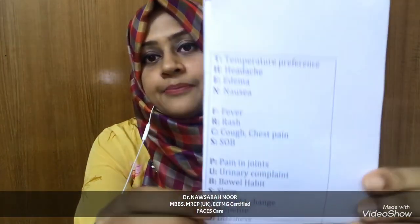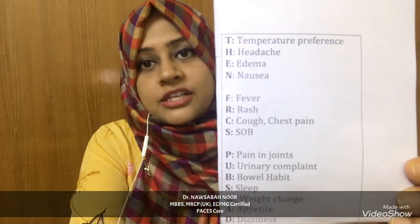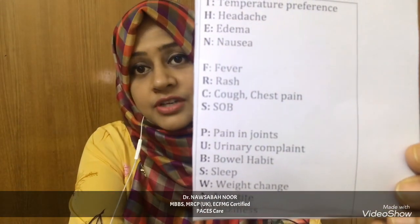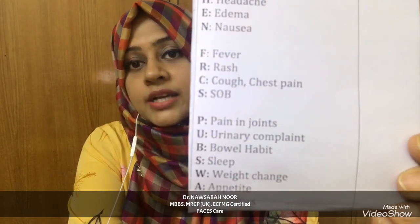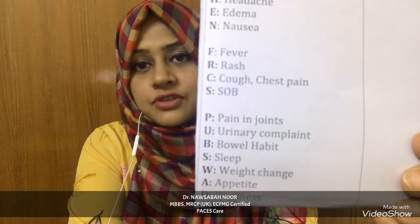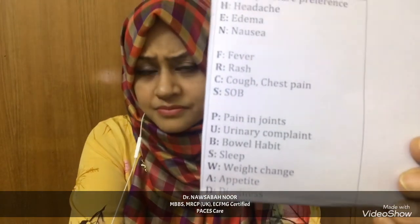Now the review of systems box. You can ask questions from head to toe related to each body system. Or use the mnemonic THEN FRCS POP SWOT: T for temperature preference, H for headache, E for edema, N for nausea and vomiting, F for fever, R for rash, C for cough and chest pain, S for shortness of breath. Then POP SWOT: P for pain in the joints, U for urinary complaints, B for bowel habit, S for sleep, W for weight change, A for appetite, and D for dizziness.